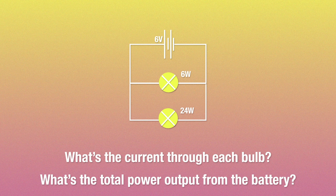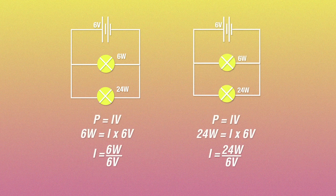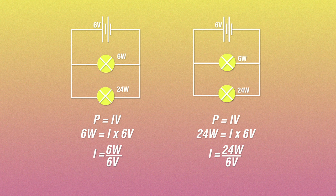Now, since the bulbs are connected in parallel to the battery, the charge carriers leaving the battery with 6 volts of EMF will either go through the 6 watt bulb or the 24 watt bulb, right? Which means both bulbs will have 6 volts of potential difference across them. Since we know the bulb's power ratings, we can use the formula P equals IV to find the current through each bulb. So the 6 watt bulb will have 1 ampere of current flowing through it, while the 24 watt bulb will have 4 amperes flowing through it.